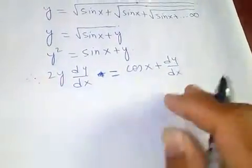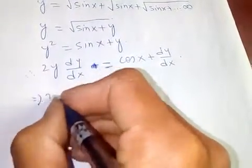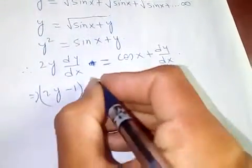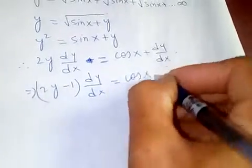Since these two are the same, I will transfer here. What we get is (2y - 1) dy/dx equals cos x. So dy/dx is cos x over (2y - 1).